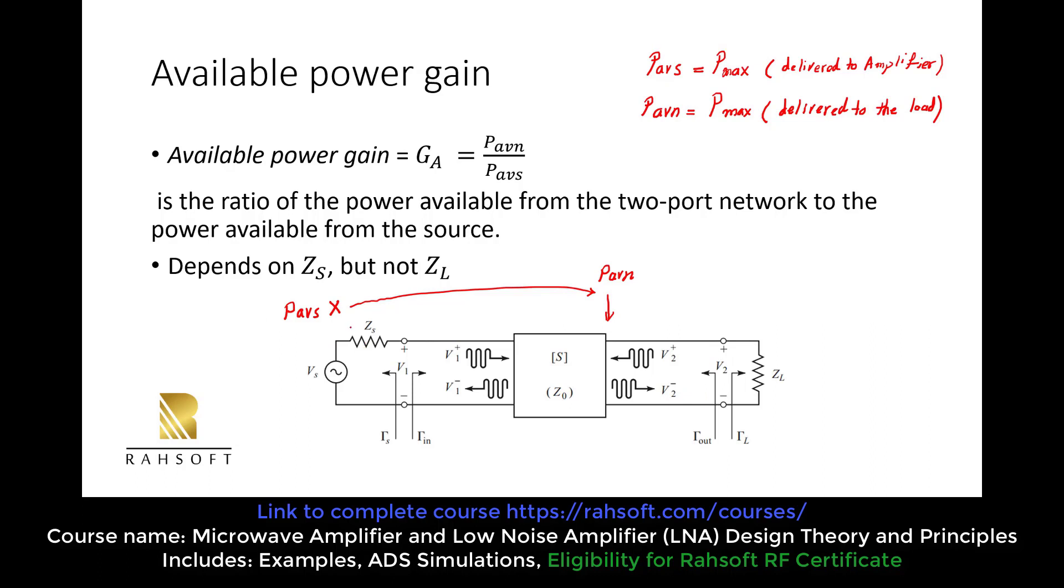That's why we say that it doesn't depend on ZL. But it depends on ZS, of course. If we change the ZS, the power delivered to this network is not going to be PAVS. So the power will drop here. And then the gain is not going to be equal to the previous case. So it depends on ZS because this gain depends on the input power, which is delivered to the network. And the input power delivered to the network depends on ZS, as we talked before. But what about ZL? It doesn't depend on ZL. We are going to talk about this. It may seem a little bit confusing, but I'm going to explain it in the next slide.